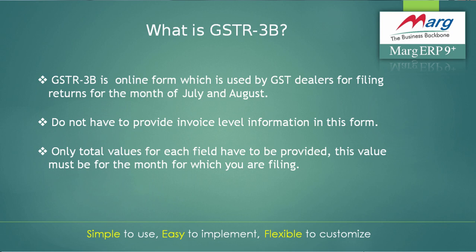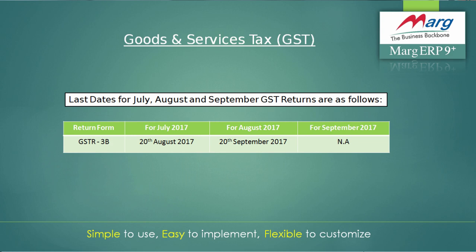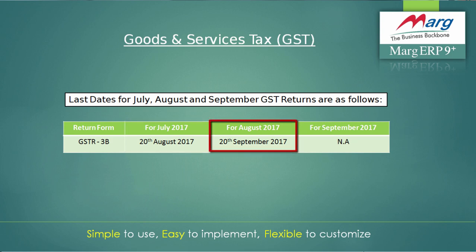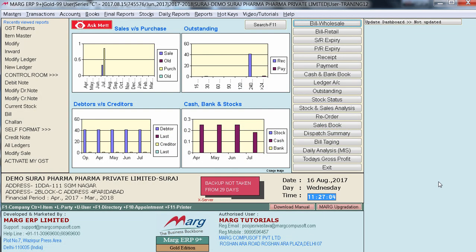The last date of filing GSTR 3B for July is 28th August, and for August the last date of filing GSTR 3B is 28th September. Now let's see the process of GSTR 3B in Marg software. Before that, make sure your software is updated with the CDC version.